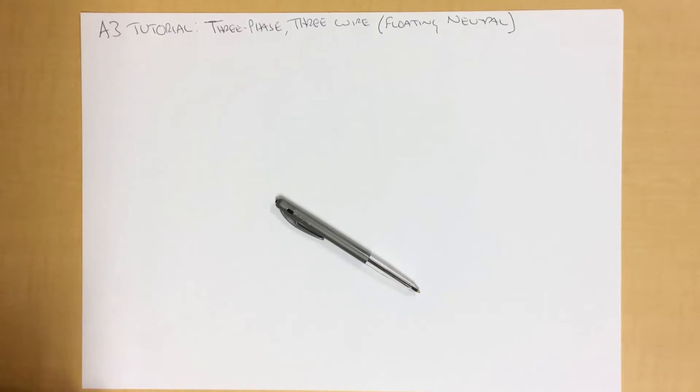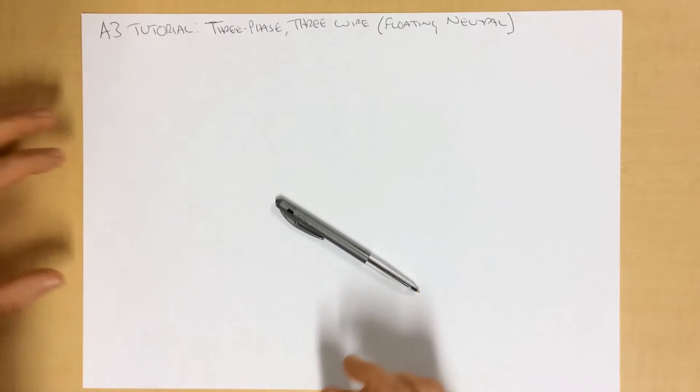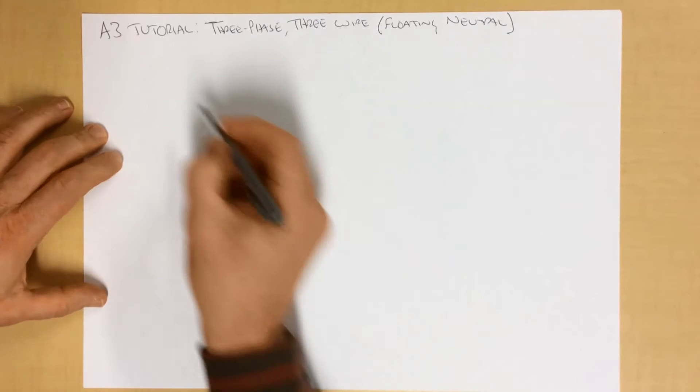Good afternoon. In this A3 tutorial, we're going to look at three-wire, three-phase systems, which inherently have what's called a floating neutral. So perhaps the best way to explain these systems from the start is to quickly sketch them.